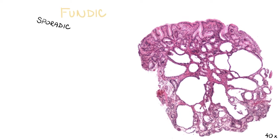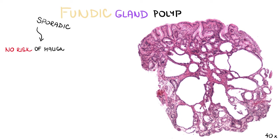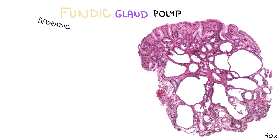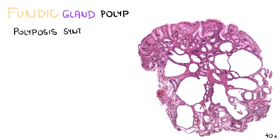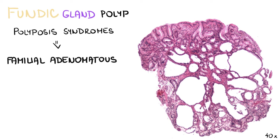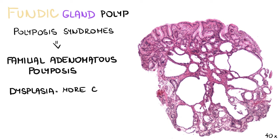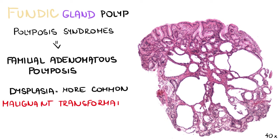Sporadic fundic gland polyps pose no risk of malignant transformation and dysplasia is usually not seen. More rarely, these polyps may occur in various polyposis syndromes, typically familial adenomatous polyposis. Dysplasia is more common in this setting, but malignant transformation is still an uncommon phenomenon.